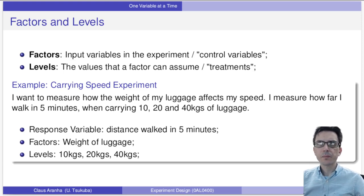For example, let's say I want to do an experiment to measure how the weight of the things I'm carrying affects my walking speed. So I measure myself walking for five minutes and see how far I can walk, carrying 10 kilos of luggage, 20 kilos, and 40 kilos. The response variable is distance walked in five minutes. The factor is weight of luggage, and the levels are 10 kilos, 20 kilos, and 40 kilos.